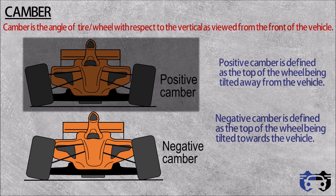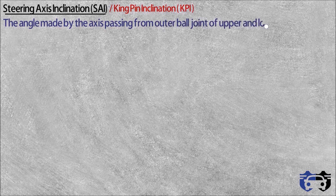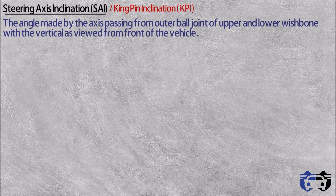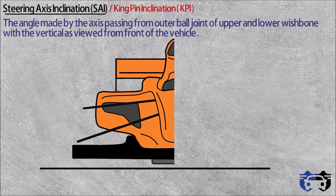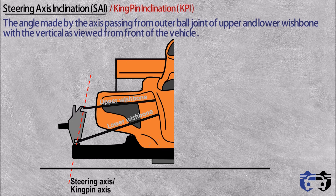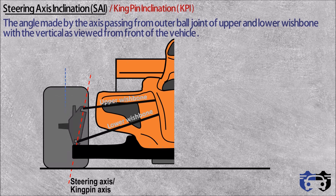The reason for choosing positive camber can be understood by understanding steering axis inclination. Steering axis inclination (SAI), also called kingpin inclination (KPI), is the angle made by the axis passing from the outer ball joints of the upper and lower wishbone with the vertical, as viewed from the front of the vehicle. Here you can see the cut section of the front view of the vehicle — these are the upper and lower wishbones connected to the chassis, and this is the steering knuckle, also called the upright.